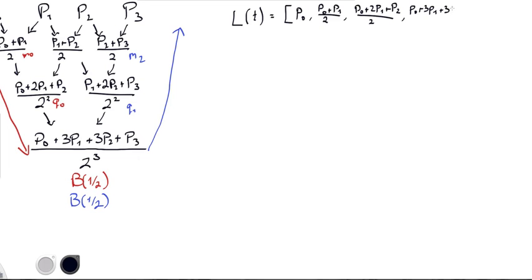And then P0 plus 3P1 plus 3, hold on, plus 3P2 plus P3 all over 2 cubed, right, so there's a squared here.